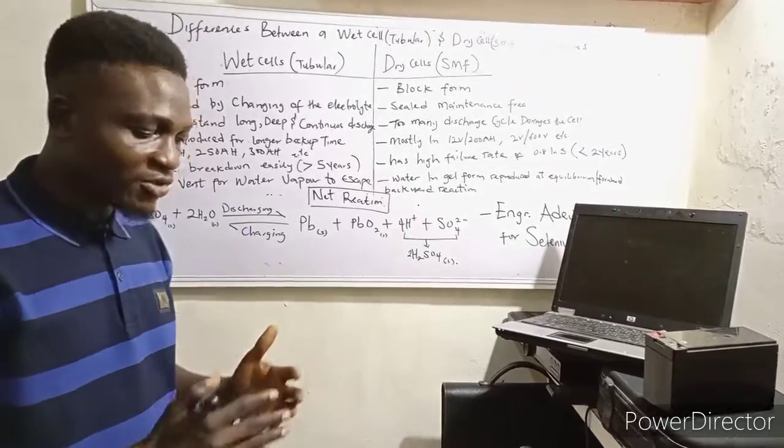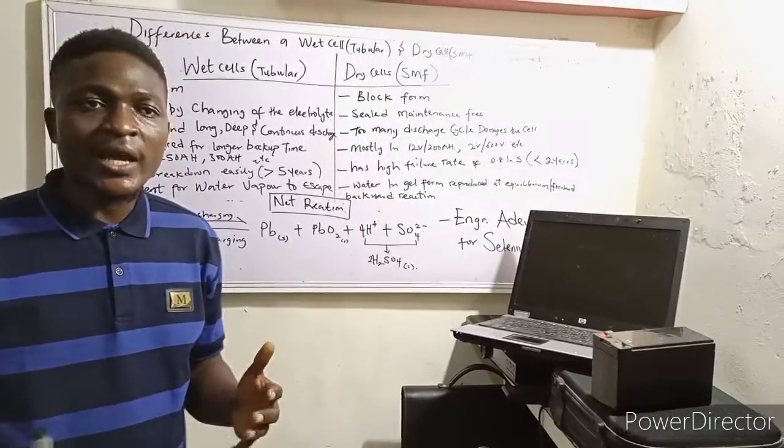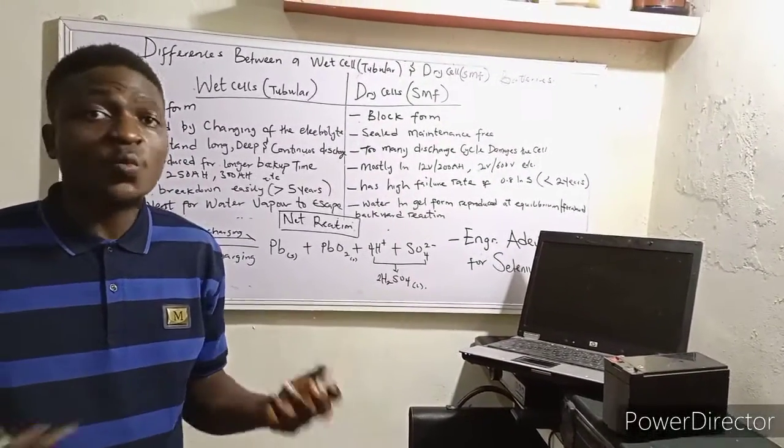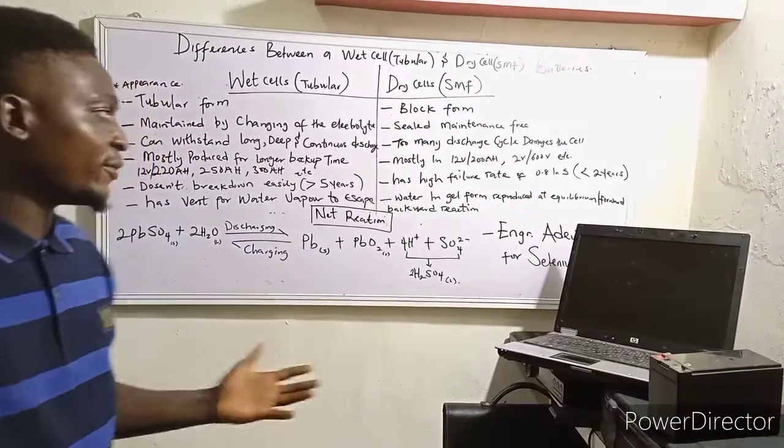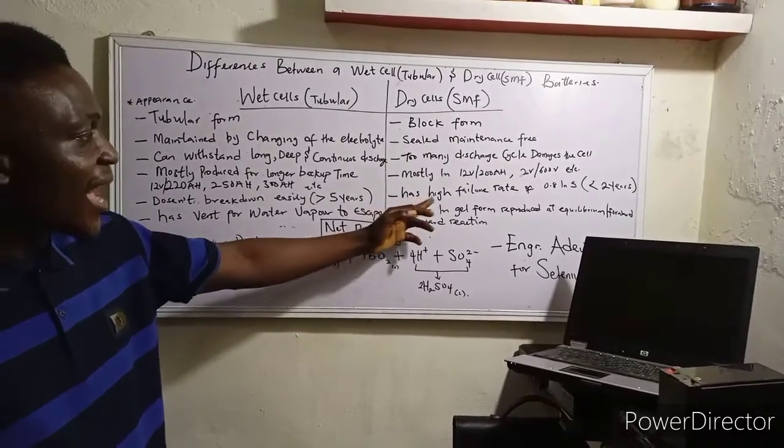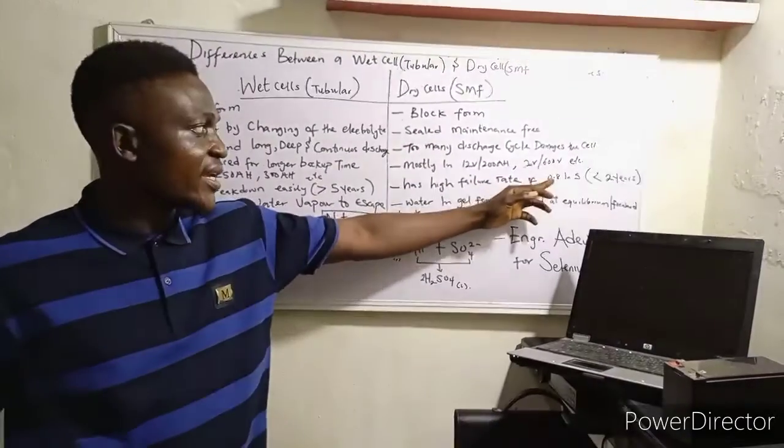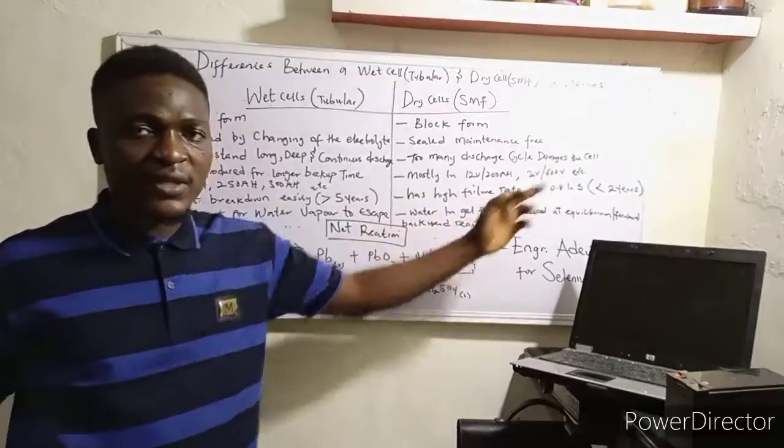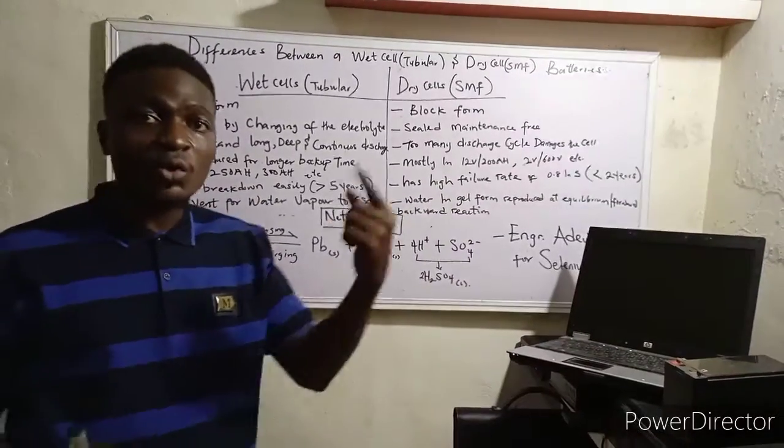Buy a dry cell battery, within two years they get to the gas point. If you have a four-battery system of dry cell batteries, within a space of two years, one of those four batteries would have failed within this period. And that is why we said dry cell battery has high failure rates of 0.8 in 5. That is, out of five batteries, you are likely to have one that will get spoiled within a year or less.